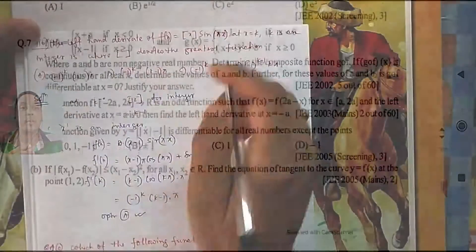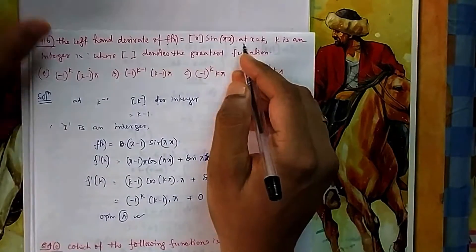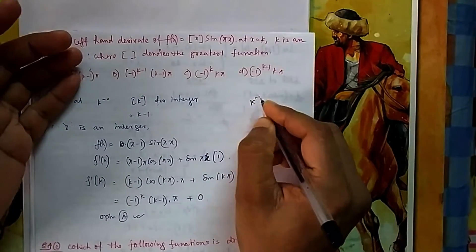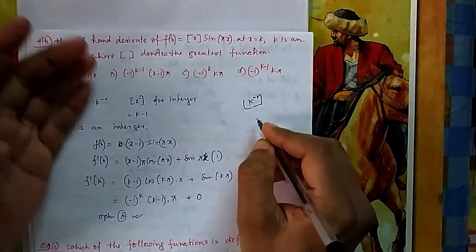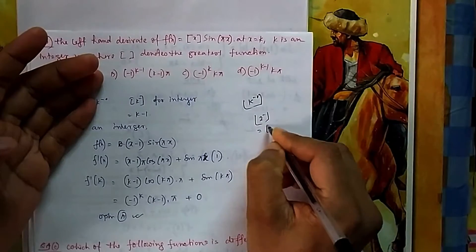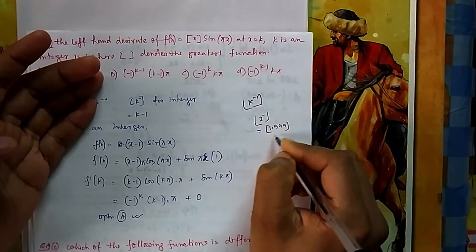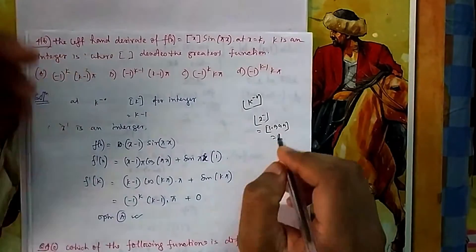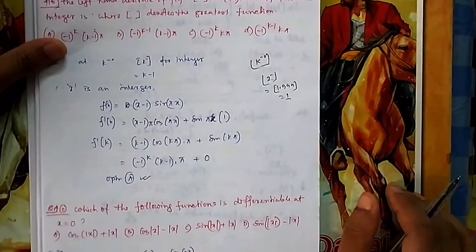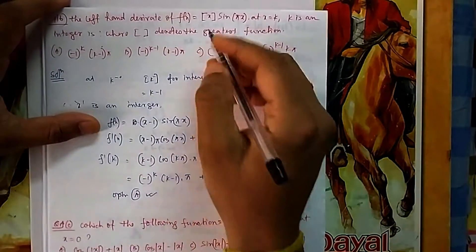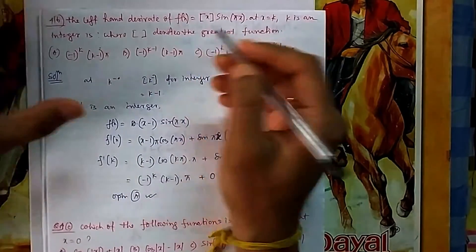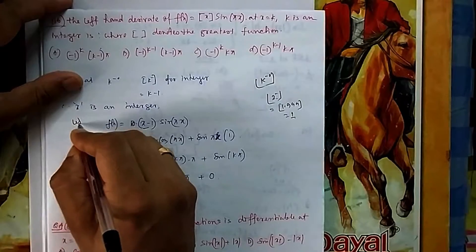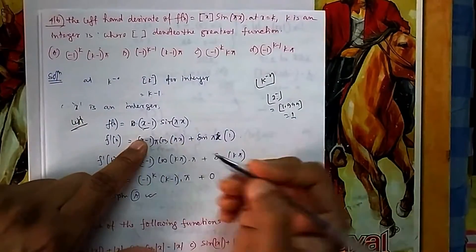For Q4b, find the left-hand derivative at x equal to k, where k is an integer and the box denotes the greatest integer function. Left-hand derivative means we consider k minus. If you put k minus — for example, putting 1.9999 — the output is 1, i.e., 2 minus 1. So the greatest integer of k minus gives k minus 1. For the left side, box x is written as x minus 1.